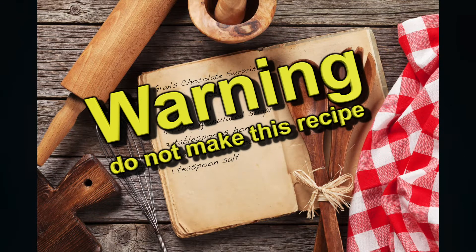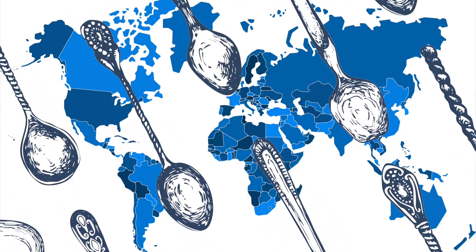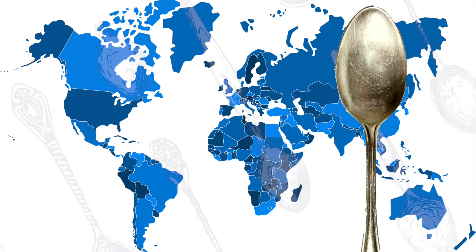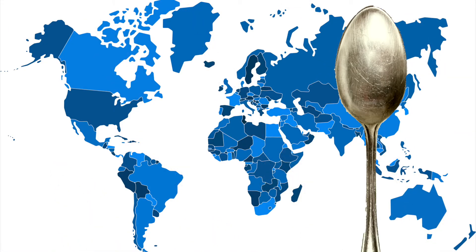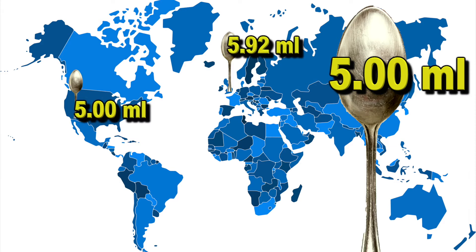And that is where the fun starts. You see, teaspoons are different sizes in different countries. The metric teaspoon — the one we should all be using — is exactly 5 millilitres. But the UK prefers the imperial teaspoon, which holds about 20% more. The USA officially uses the metric teaspoon, but also has the customary teaspoon, which is about 1% smaller.